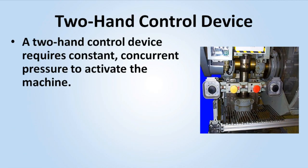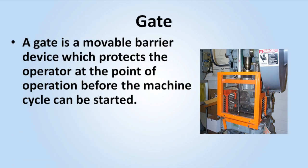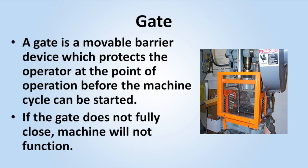A two-hand control device requires constant concurrent pressure to activate the machine. The operator's hands are required to be at a safe location and at a safe distance from the danger area while the machine completes its closing cycle. A gate is a movable barrier device which protects the operator at the point of operation before the machine cycle can be started. If the gate does not fully close, the machine will not function.